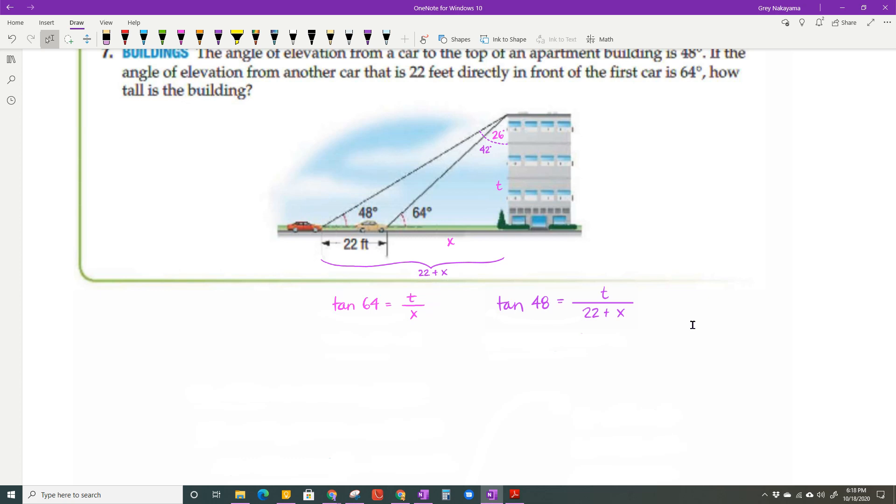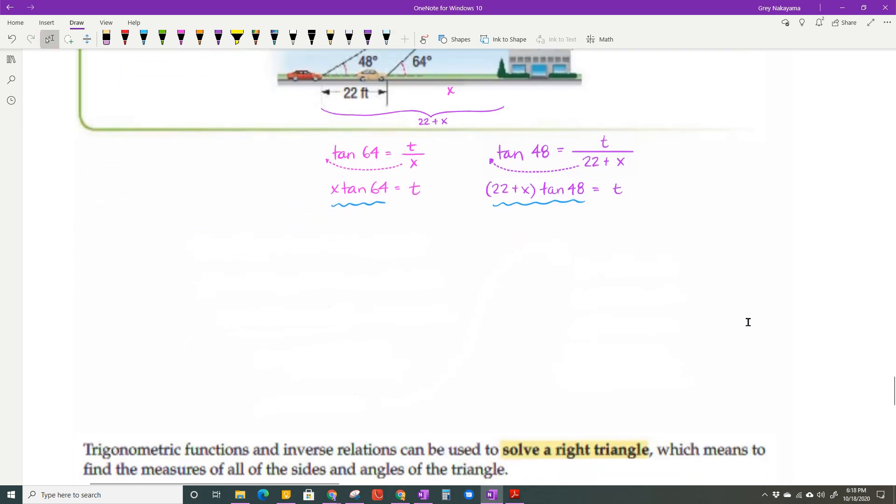The easier variable to solve for is T. When I do that, I get 22 plus X times the tangent of 48 equals T. If I do the same thing and solve for T from the other equation, now I have two expressions that are both equal to T. So I'm going to set those expressions equal to each other. X times the tangent of 64 equals 22 times the tangent of 48 plus X times the tangent of 48. Similar to when we solved things with logs, I've got to get everything with an X on the same side. So I'm going to subtract X tangent of 48, and that equals 22 tangent of 48.